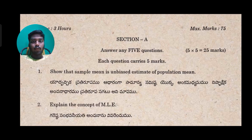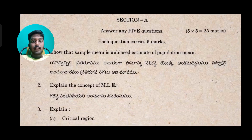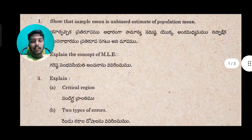Unit 1 covers 2 questions. The first question: show that sample mean is an unbiased estimator of population mean. Next, explain the concept of MLE — this appeared in both the 2019 and 2018 question papers.